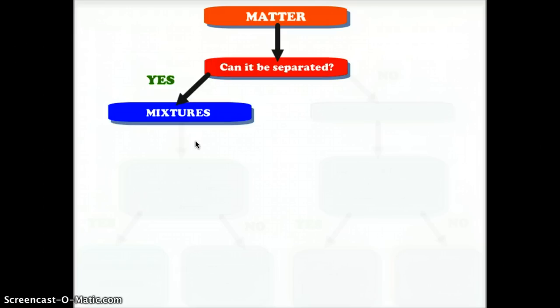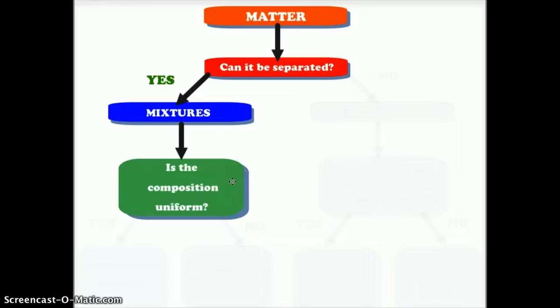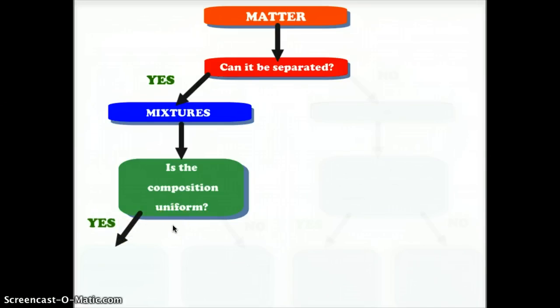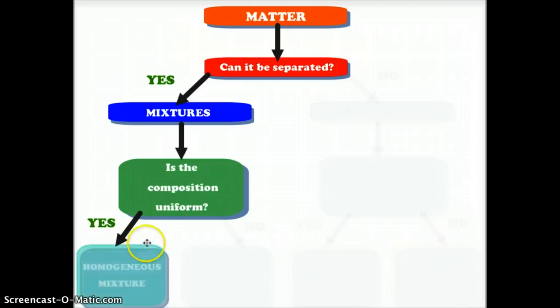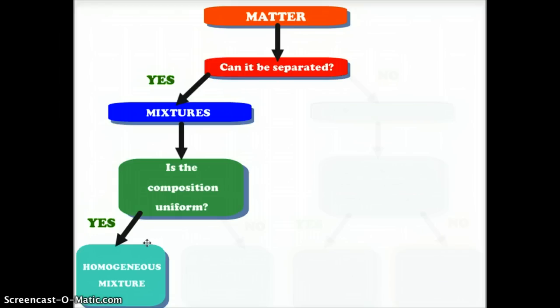If it is a mixture, we ask another question: is the composition uniform? If the composition is uniform, we have two options. If the answer is yes, we have a homogeneous mixture. An example would be vanilla ice cream—the same at the top, middle, or bottom of the container. Vanilla ice cream is vanilla ice cream.